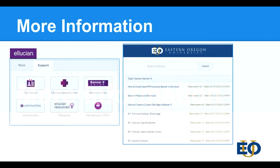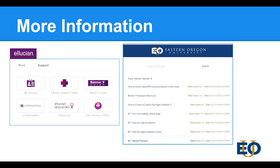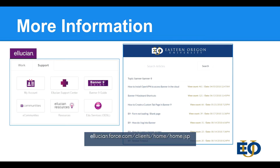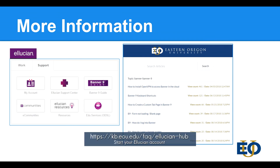You can find more information at EOU's Knowledge Base by visiting the following link. For more information on Banner, you can also visit the Ellucian Hub, where you can search documentation, community forums, and see if others have had the same question as you. For help getting into your Ellucian account, visit the KB article at the link below.